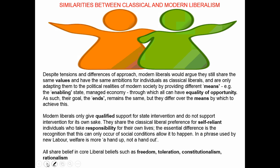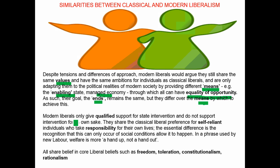Despite these apparent differences, there are still similarities between classical and modern liberalism. Modern liberals themselves would argue not only are there similarities, but that they have not abandoned their liberal beliefs — they have simply built on them. Modern liberals argue they still share the same values and ambitions for individuals as classical liberals, and are only adapting them to the political realities of modern society by providing different means — such as the enabling state or the managed economy — through which all individuals can have equality of opportunity. Their goal — the ends — remains the same; they differ only over the means by which to achieve it.